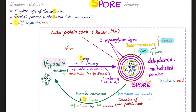When the circumstances are favorable again, the spore is going to absorb water, it's going to swell, and it will disrupt the outer protein coat. And before you know it, we're back at the vegetative state, because now we have a robust amount of nutrition. This germination process will take about one and a half hours.